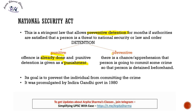Preventive detention, on the other hand, is when there is a chance or apprehension that a person is going to commit some crime. That means the crime has not yet been committed, but in the mind of the authorities, this particular person poses a threat to India's law and order or national security situation. So to prevent that person from committing the crime, they are detained and arrested. This is why we call it preventive detention — the purpose is preventing individuals from committing a crime.